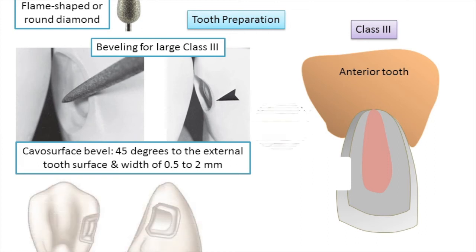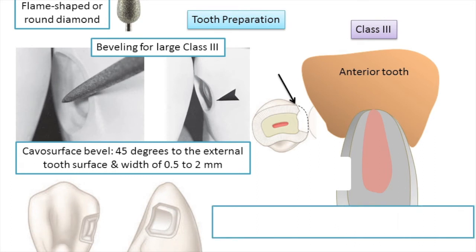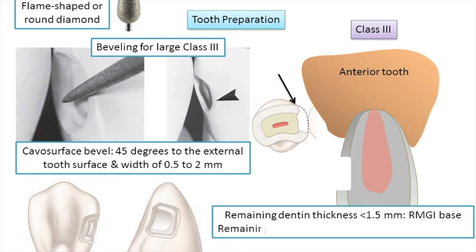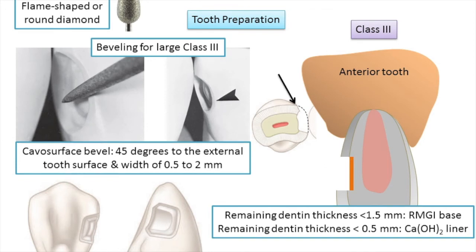This image shows the cavity preparation design for larger Class 3 cavities, with the arrow indicating the bevel. If the remaining dentine thickness is judged to be less than 1.5 millimeters in the deepest portions of the preparation, apply a resin-modified glass ionomer (RMGI) base. If the remaining dentine thickness is 0.5 millimeters or less, a calcium hydroxide liner should be placed as an indirect pulp capping agent, or MTA can increasingly be used as a direct pulp capping material. Any calcium hydroxide or MTA liner should always be covered with an RMGI base to seal the area and prevent the etchant from dissolving the liner.